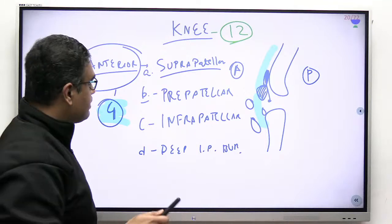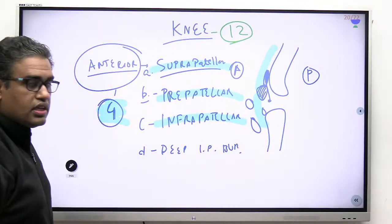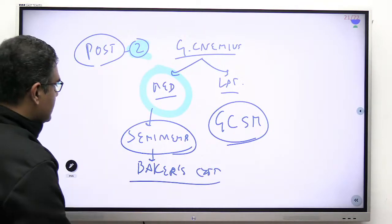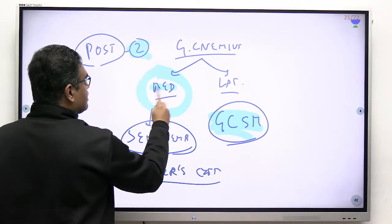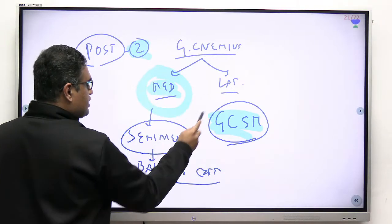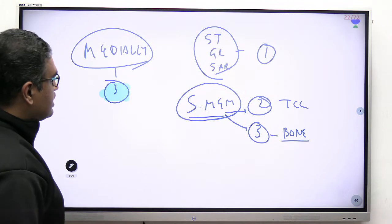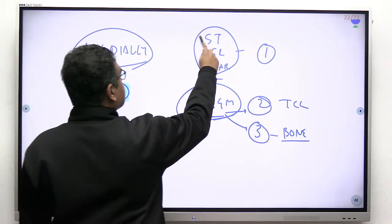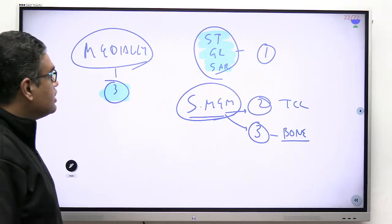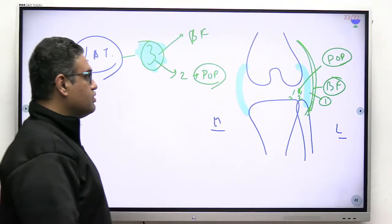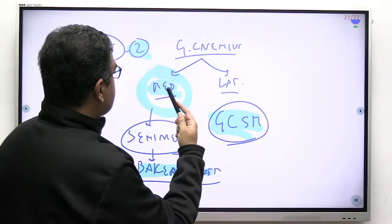The clinically important bursas of the knee are: the suprapatellar bursa (direct communication with the joint), the prepatellar bursa (housemaid's knee), the deep infrapatellar bursa (clergyman's knee), the gastrocnemius-semimembranosus bursa posteriorly (Baker's cyst — medial head of gastrocnemius), and the pes anserinus bursa medially, whose bursitis is quite common. Laterally, the biceps femoris bursa may also be clinically significant.